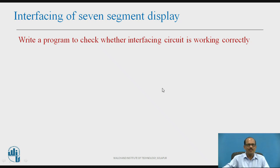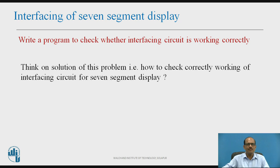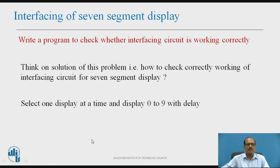Interfacing of 7-segment display: write a program to check whether interfacing circuit is working correctly. Think on the solution of this problem — that is, how to check correctly the working of interfacing circuit for 7-segment display. The circuit has already been explained, and we have to write a program to check this hardware. For checking this interfacing circuit of 7-segment display, select one display at a time and display 0 to 9 with a delay.